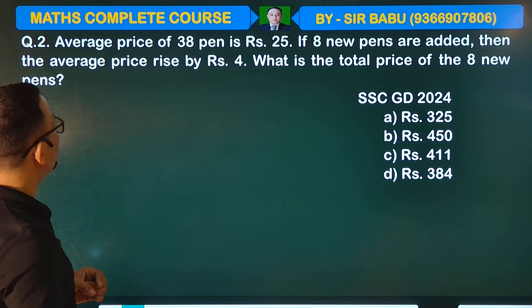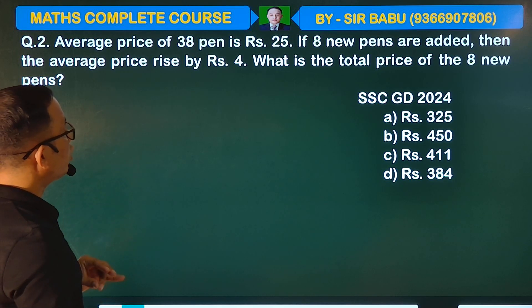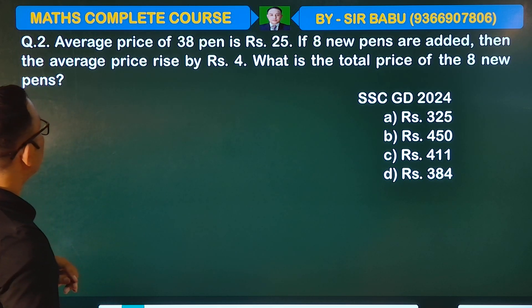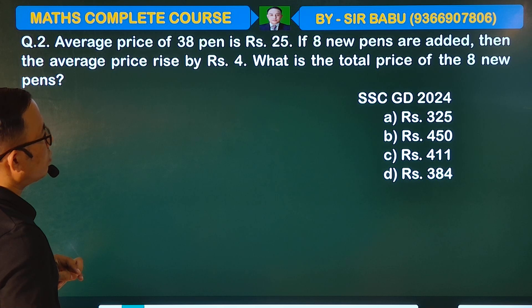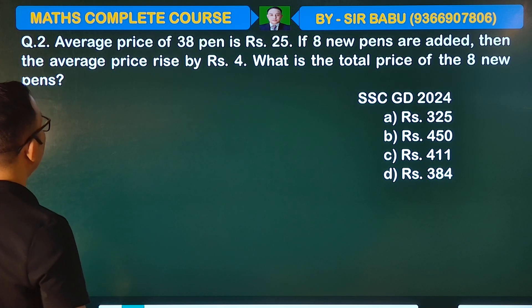The average price of 38 items is this. If any items are added, the average price rises by 4. What is the total price of the 8 new items?